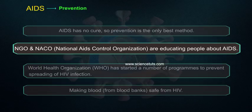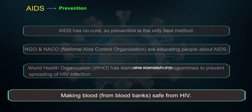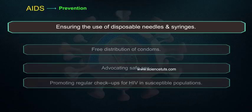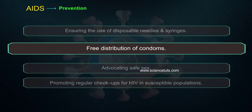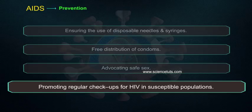NGOs and NACO (National AIDS Control Organization) are educating people about AIDS. The World Health Organization (WHO) has started a number of programs to prevent the spreading of HIV infection, including making blood from blood banks safe from HIV, ensuring the use of disposable needles and syringes, free distribution of condoms, advocating safe sex, and promoting regular check-ups for HIV in susceptible populations.